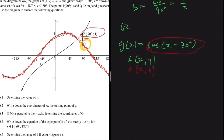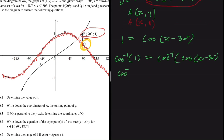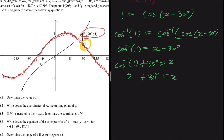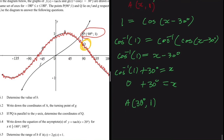Setting g(x) = 1: 1 = cos(x - 30°). Taking cos inverse of both sides: cos⁻¹(1) = x - 30°, so x = cos⁻¹(1) + 30° = 0° + 30° = 30°. Therefore, the coordinates of turning point A are (30°, 1).